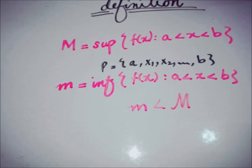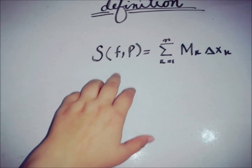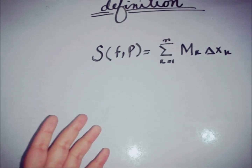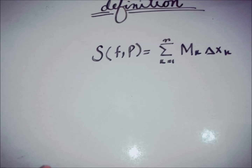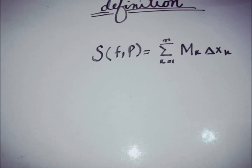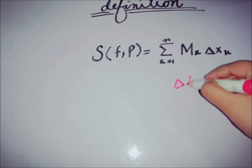We have also seen the definition of the Riemann upper sum and the Riemann lower sum. The upper Riemann sum is defined for a function that is bounded on the interval A to B, where Mk is the supremum — the maximum value — within a certain sub-interval delta Xk of the partition.